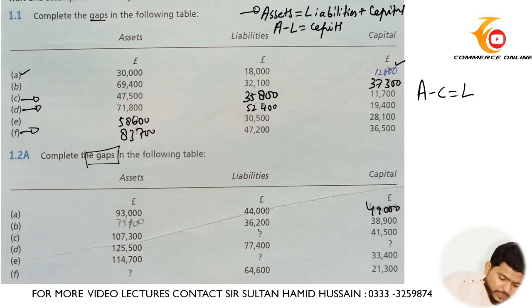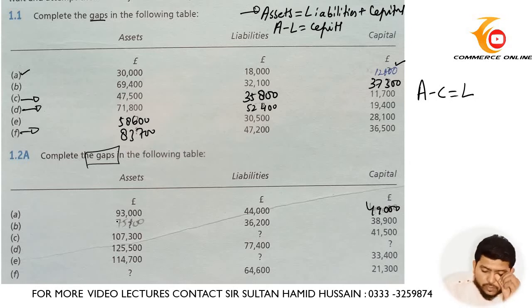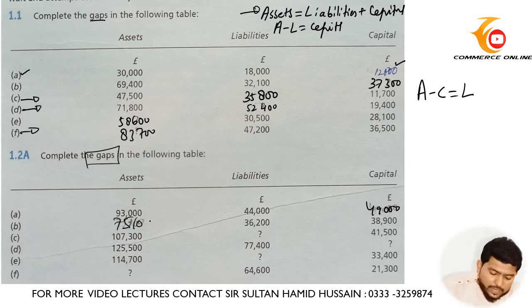In part B, you need to find out assets. You need to add liabilities plus capital and you will get assets, that is 71,500.